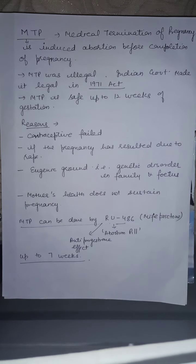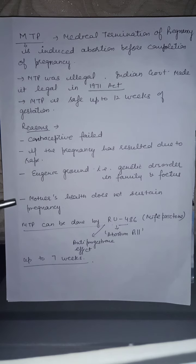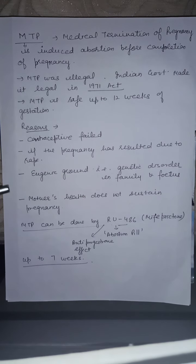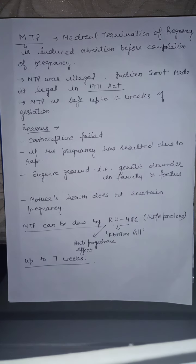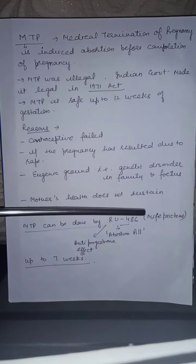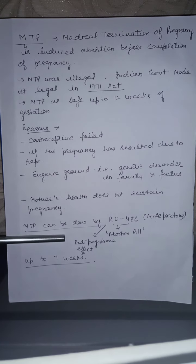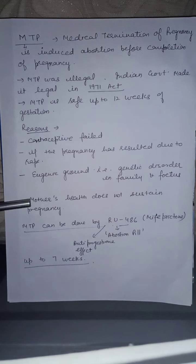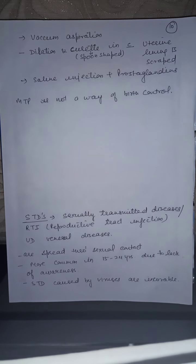MTP may also be done on eugenic grounds — that is, if there is a genetic disorder in the family or fetus — or if the mother's health cannot sustain the pregnancy. MTP can be performed using RU486, the abortion pill, which has an anti-progesterone effect and can abort pregnancies up to seven weeks.